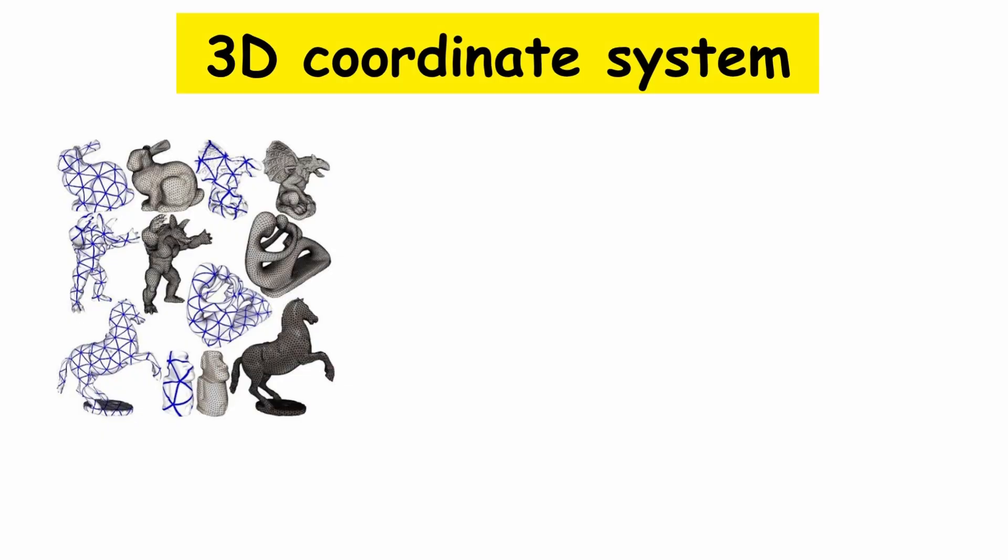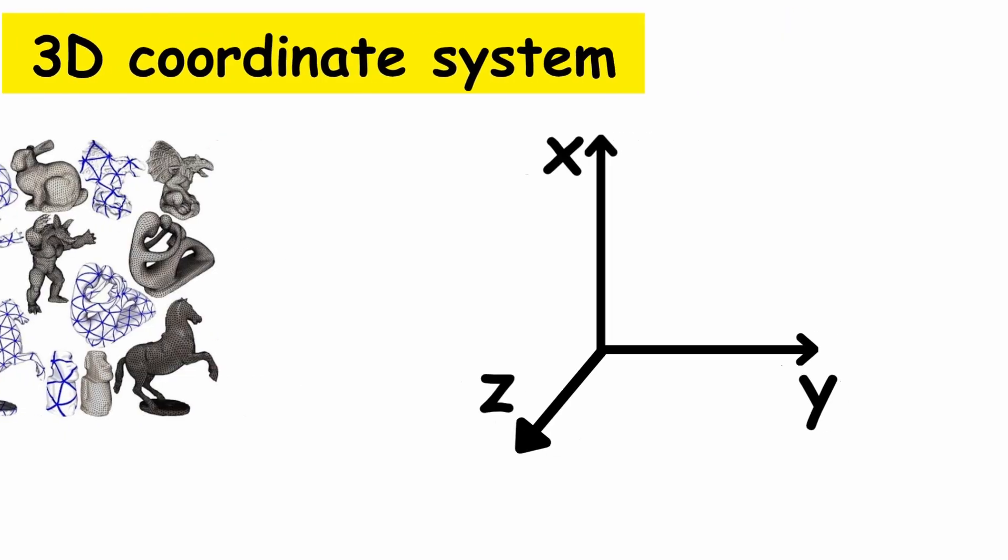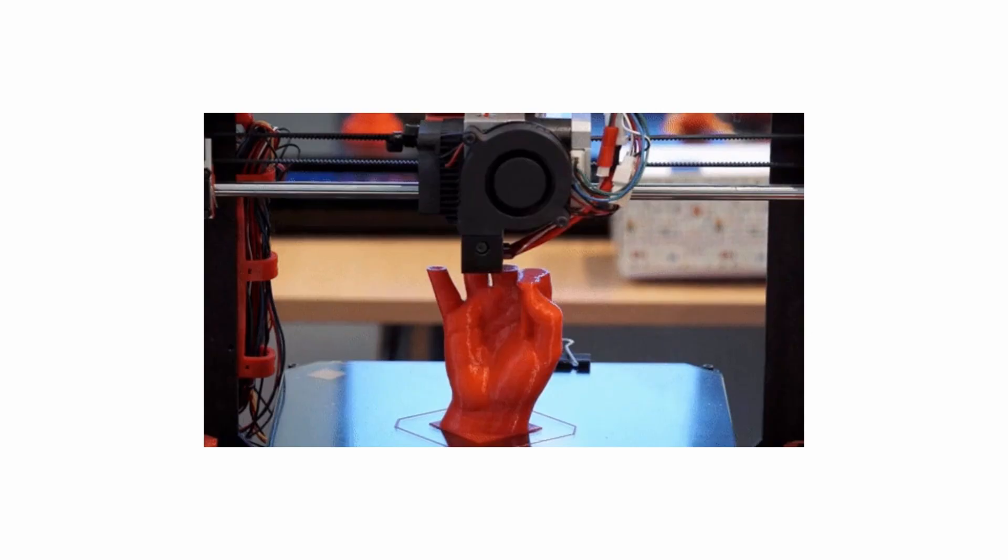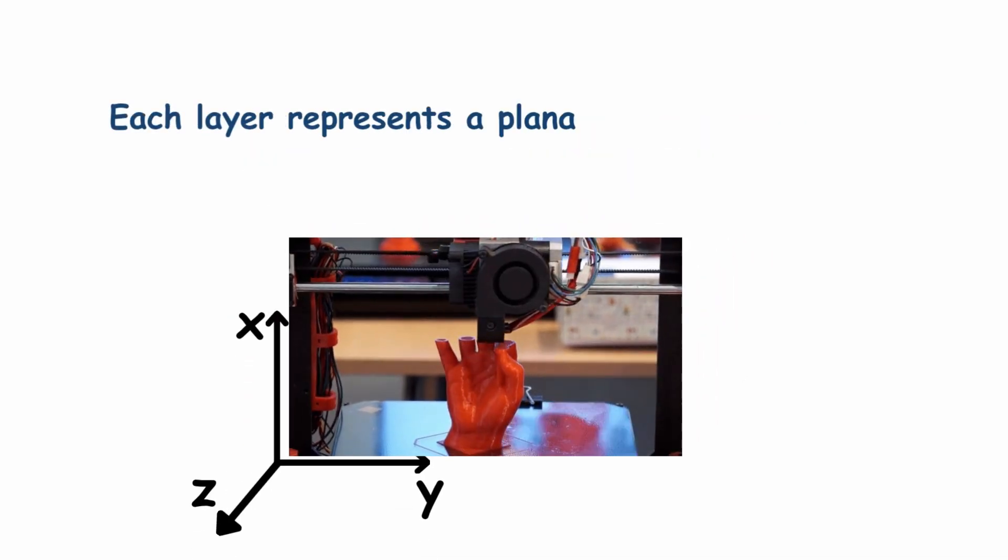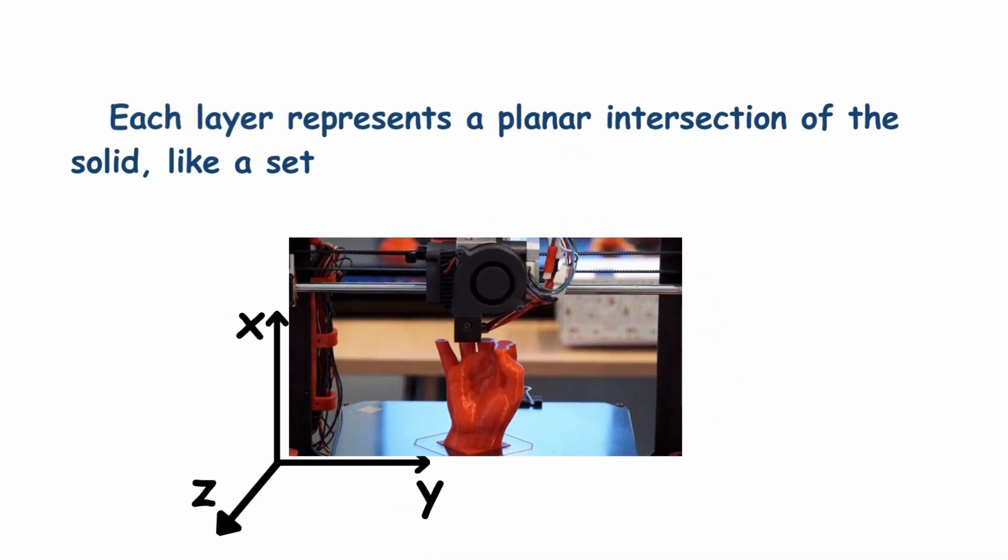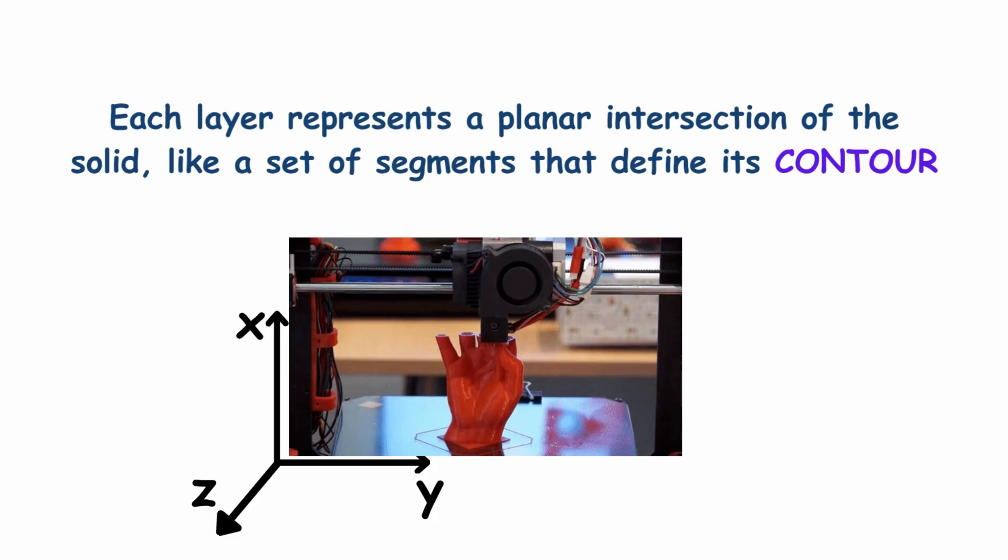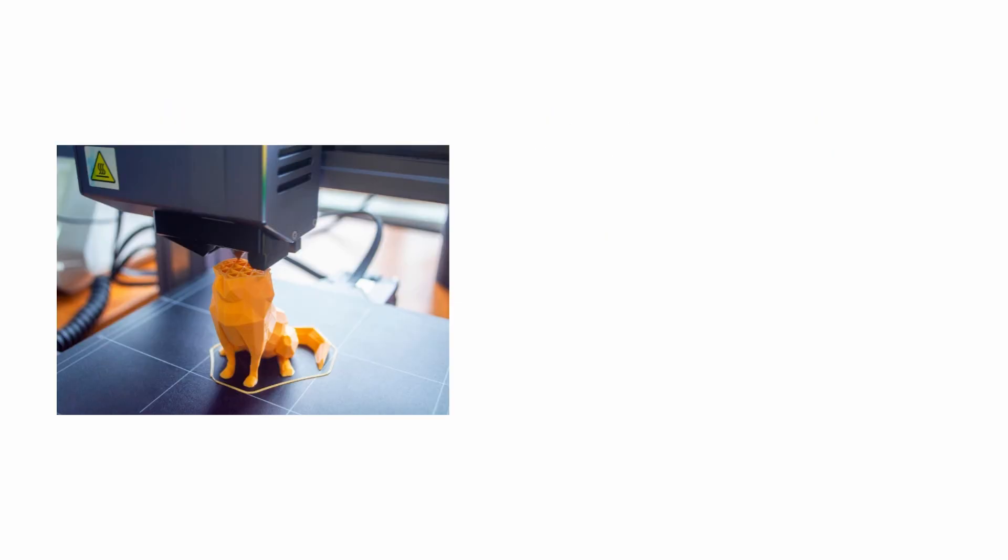These models are projected onto a three-dimensional coordinate system X, Y, Z, and then sectioned horizontally to build the object layer by layer. Each layer represents a planar intersection of the solid, like a set of segments that define its contour. Printed shapes must be continuous and closed, or they cannot be physically constructed.